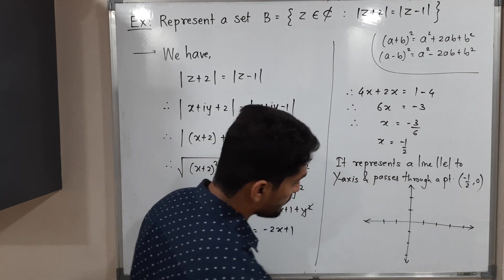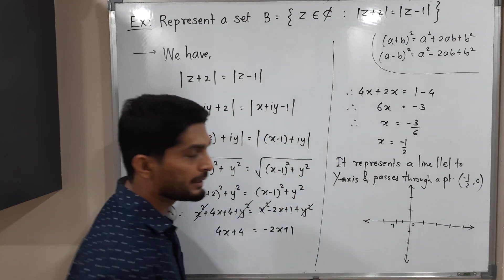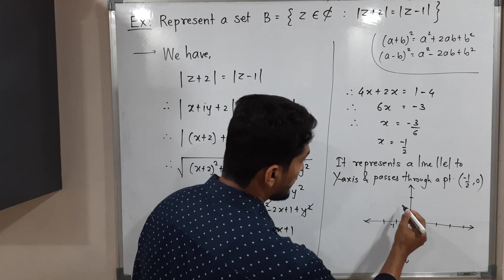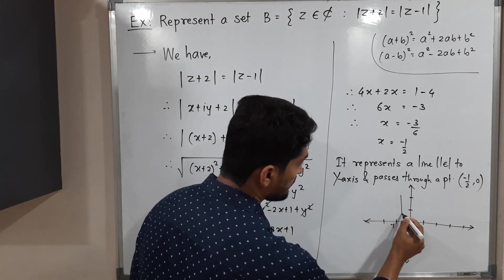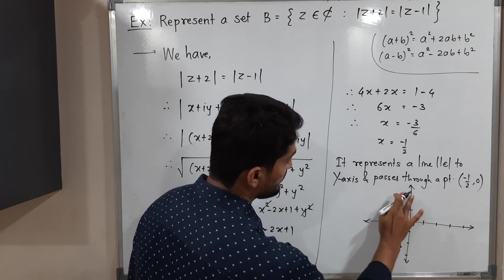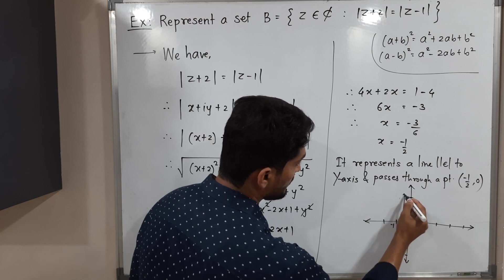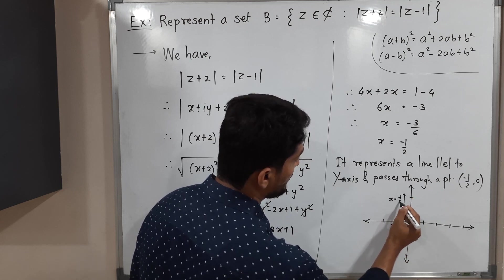So let me show in this diagram. So here 0, here is minus 1. So minus 1 by 2 will be here. So this is a line. This is a line parallel to y axis and passes through this. Let me draw properly. Yes, it looks better. So x is equal to minus 1 by 2.